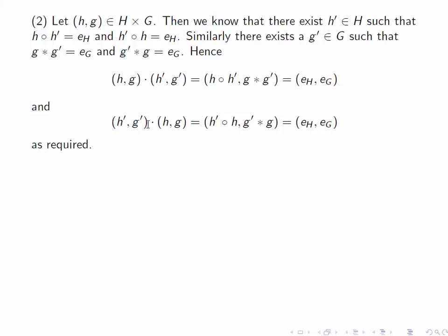We repeat this on the left and again we get (E_H, E_G) as required. Thus we have proved the existence of an inverse of an arbitrary element in H cross G.